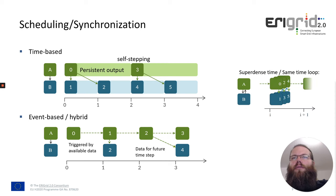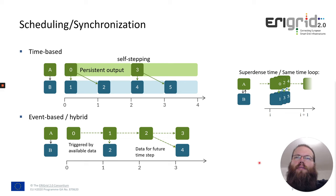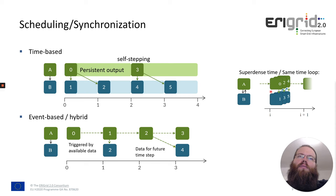Another new feature of Mosaic 3 related to the event-based feature is super-dense time, or same-time loops. Mosaic 3 now allows this when we have a cyclic dependency — a connection from A to B and from B to A. For example, when you have a controller in a simulation you usually have these cyclic dependencies. In the old Mosaic we had to add a time-shifted connection, meaning one connection would be active for a later time step. Now we can use the same-time loop to iterate between two simulators without progressing in simulation time — staying at simulation time i and communicating multiple times back and forth.